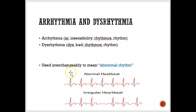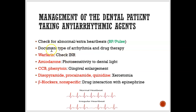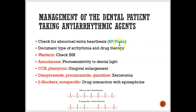Arrhythmia means abnormal rhythm - a normal heartbeat shows regular peaks, but an arrhythmia is when the patient skips a beat or has an abnormal rhythm. There are many ways to treat arrhythmia, including warfarin, calcium channel blockers such as phenytoin, and beta blockers. Anytime we have someone with anti-arrhythmic medications, we need to check for abnormal heartbeats by monitoring their blood pressure and pulse. Always monitor patients with heart conditions before starting dental treatment.